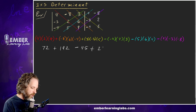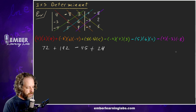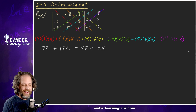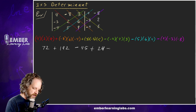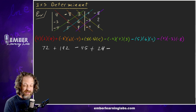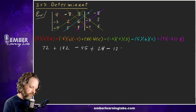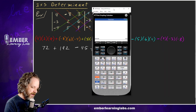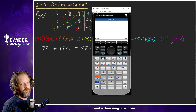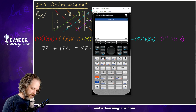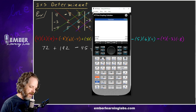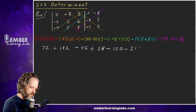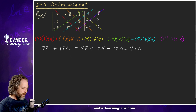Now the up diagonals: minus negative 4 times 2 times 3 — even number of negatives, so positive — that's 24. Then minus 5 times 6 times 4, which is 120 and it's positive. Then minus 9 times negative 3 times negative 8 — three negatives, so negative — 9 times 3 times 8 is 216.